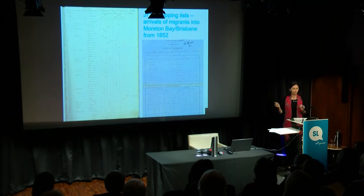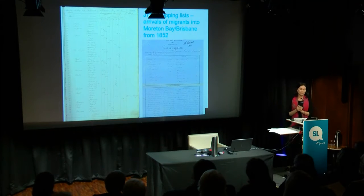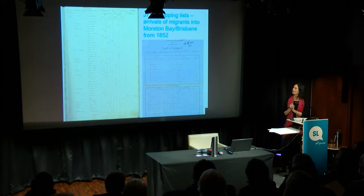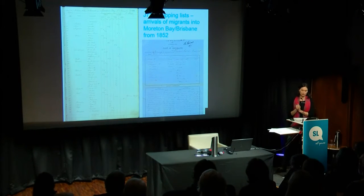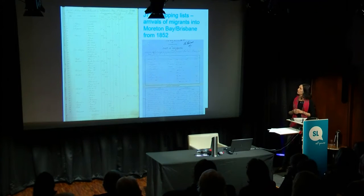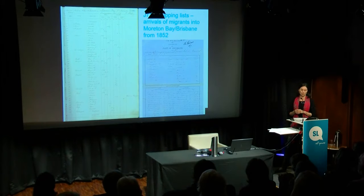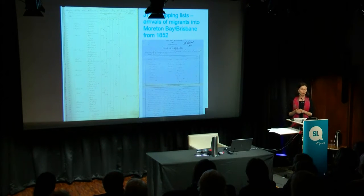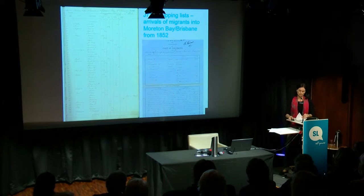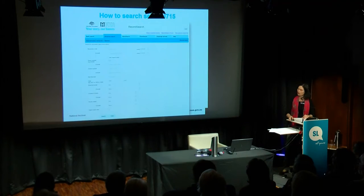I just wanted to show you these because they're quite beautiful. The earliest passenger list we have for Brisbane Moreton Bay is 1852, and this is what the earlier lists look like. The one on the right is the Humboldt Mire, which arrived in Brisbane on the 8th of November 1870 with over 300 Prussian migrants on board.